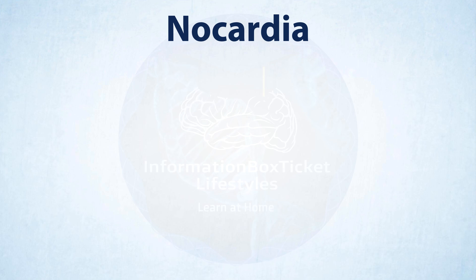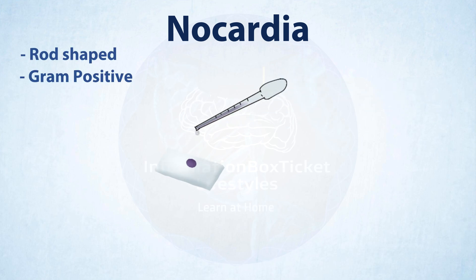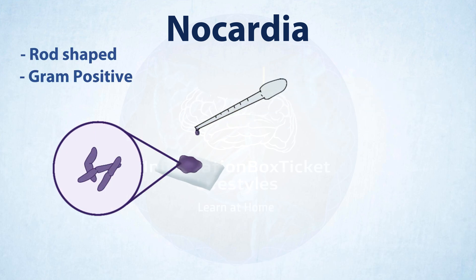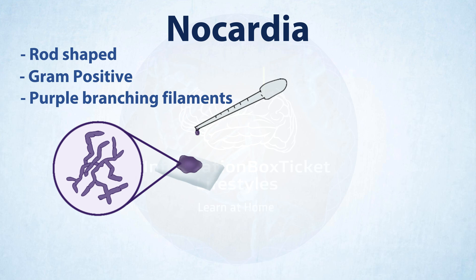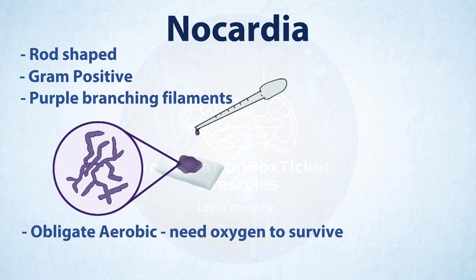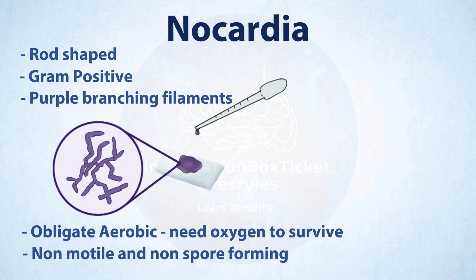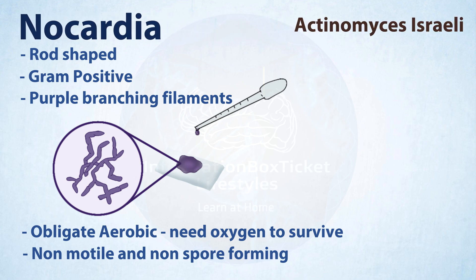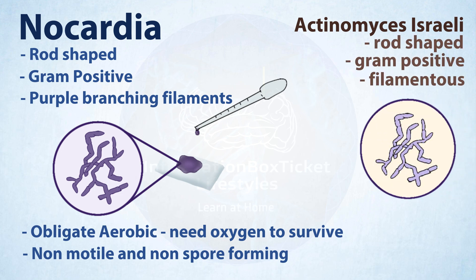Nocardia is a rod-shaped gram-positive bacteria, which becomes purple when stained with gram. When there are lots of them, they form purple branching filaments. They are obligate aerobes, which means they require oxygen to develop. They are also non-motile and do not produce spores. But this sounds exactly like Actinomyces israelii, another kind of rod-shaped, gram-positive, filamentous bacterium with many other similarities.